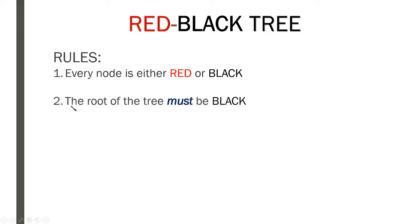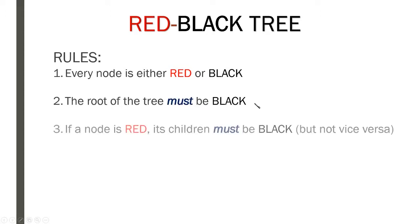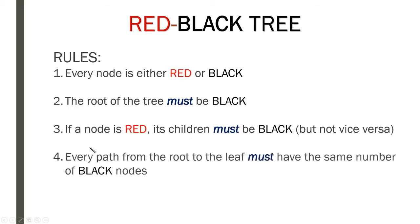Second rule: the root of the tree must be black. The third rule: if a node is red, its children must be black — but not vice versa. The fourth rule: every path from the root to the leaf must have the same number of black nodes.